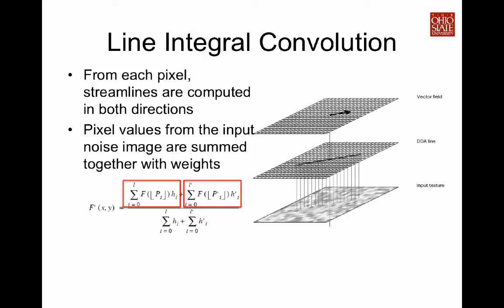And then we do the same thing for the backward streamline. Here again, the f function is the input noise pixel values. Pi prime are the pixel locations on the backward streamline. And then we multiply each noise pixel value by a weight, h prime, which again is defined by the convolution kernel. We add those weighted noise image values together and then normalize by the sum of the total weights, which will produce the value of the output pixel.